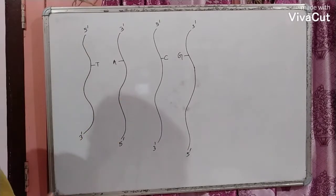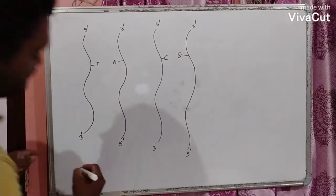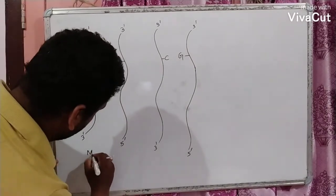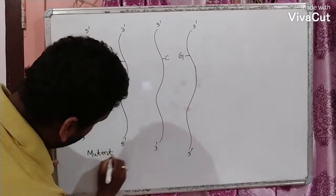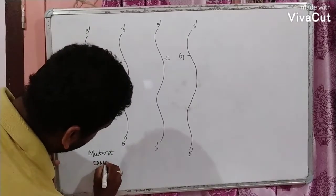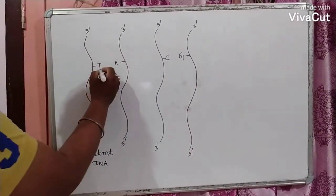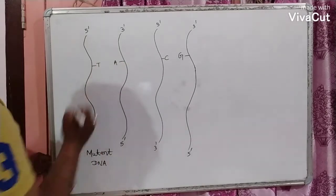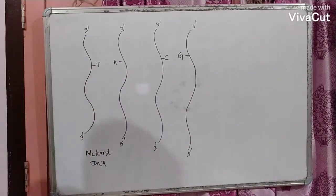The first one is the mutant DNA. And this mutant DNA has a TA base pair, thymine base paired with adenine.